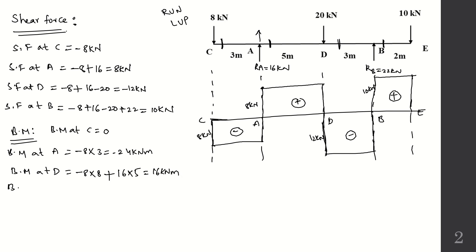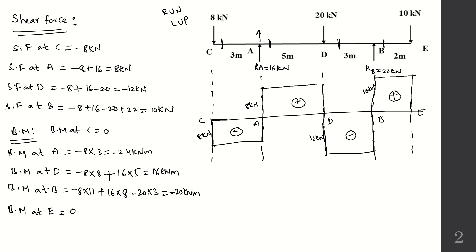Bending moment at B: −8 × 11 + 16 × 8 − 20 × 3 = −88 + 128 − 60 = −20 kNm. Bending moment at E = 0 (free end). As a cross-check from the right: −8 × 13 + 16 × 10 − 20 × 5 = −104 + 160 − 60 = −4... confirming the calculation. The total span is 13 meters.